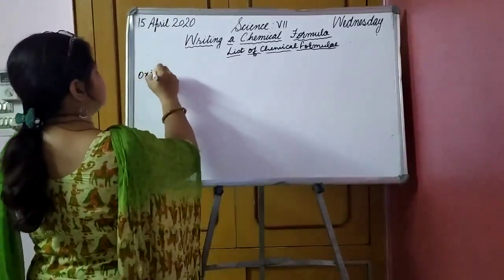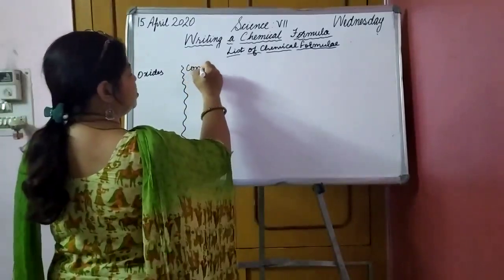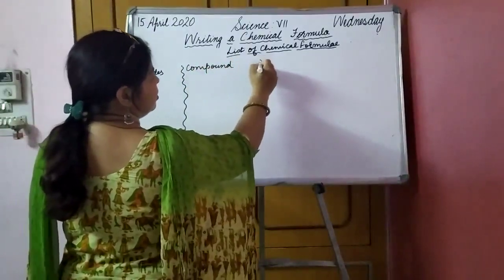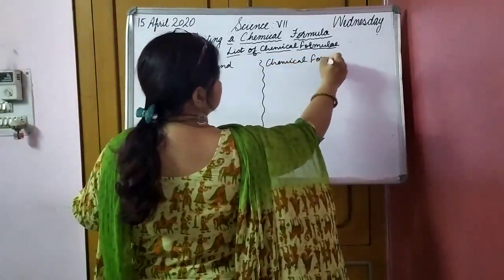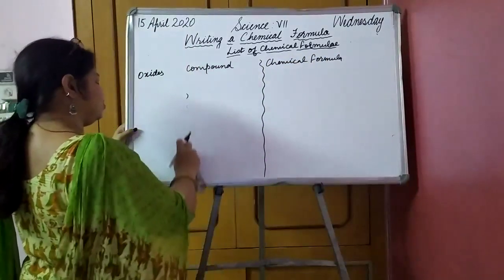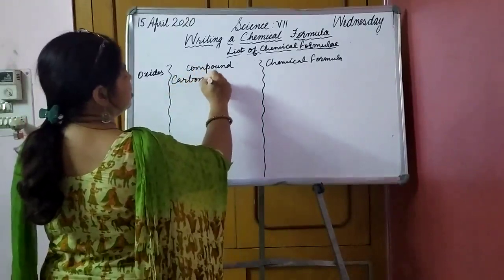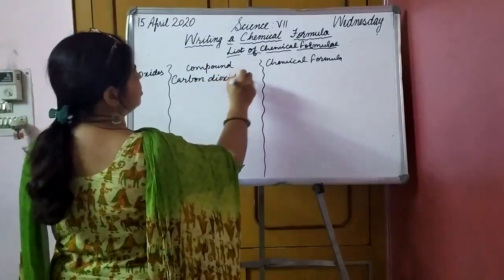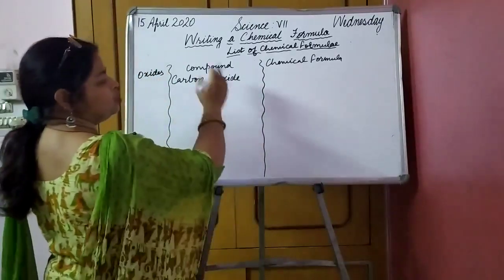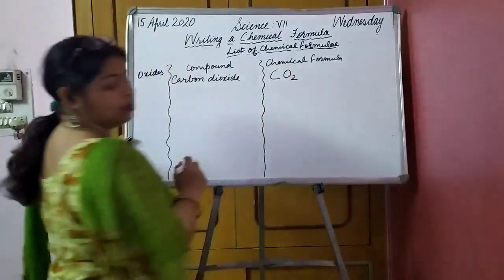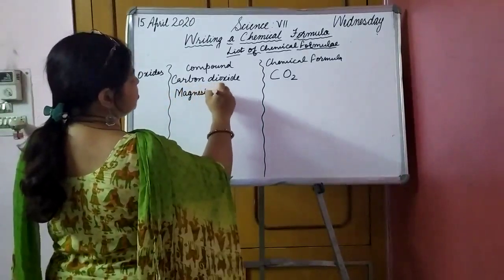I am writing a list of some chemical formulae. First, we are going to write about the oxides. I am writing the compound name and its chemical formula. The first one is carbon dioxide. As the name gives you a hint — oxide means the other element is oxygen, and dioxide means two oxygens — so it is an oxide of carbon having two oxygens. So CO2. Next is magnesium oxide.